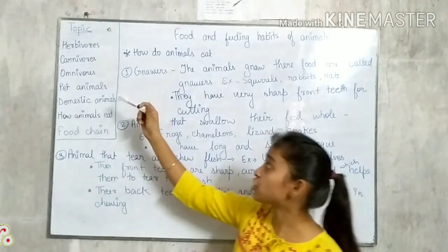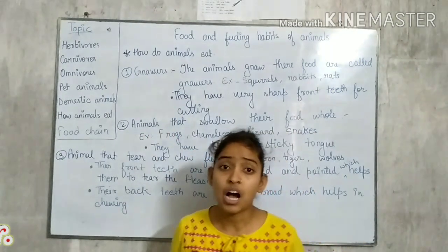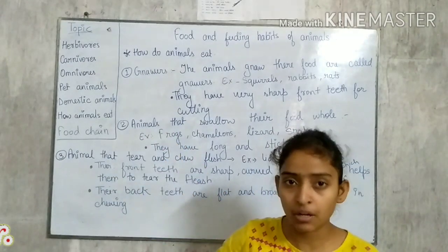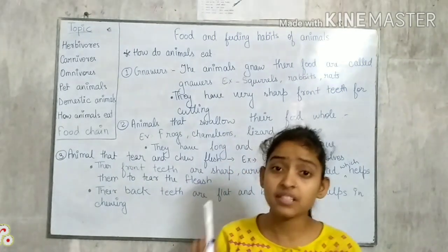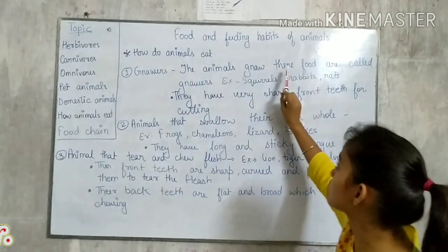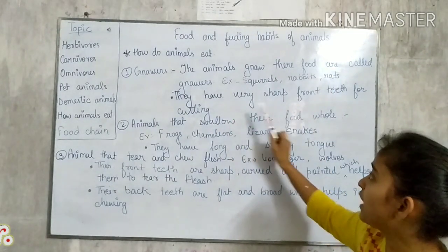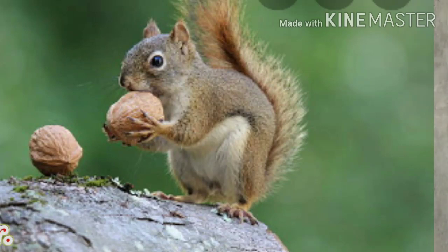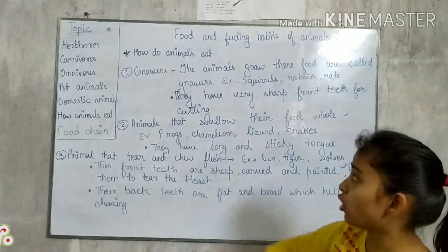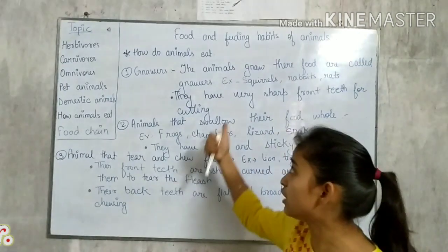Now I am going to teach you our next topic: How Animals Eat. There are five ways how animals take their food. First is Gnawing — here the G is silent, so the pronunciation is 'gnawing.' Animals that gnaw their food have very sharp front teeth. With the help of these two sharp front teeth, they gnaw and cut their food.